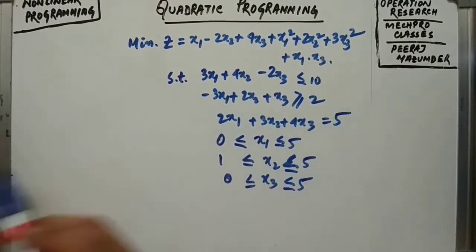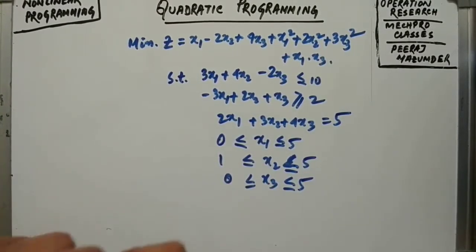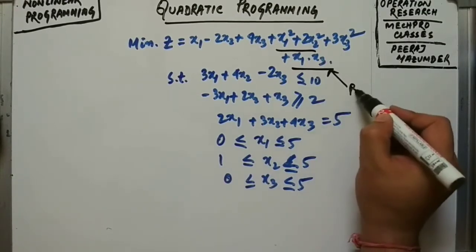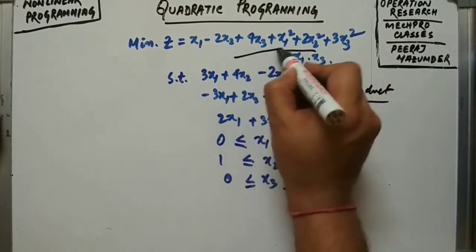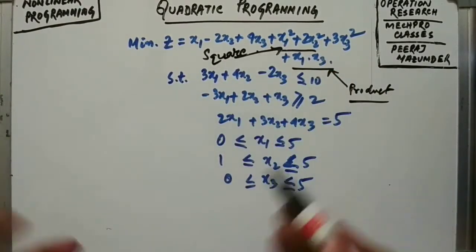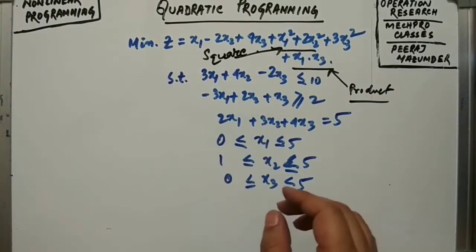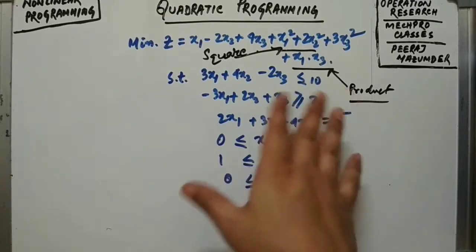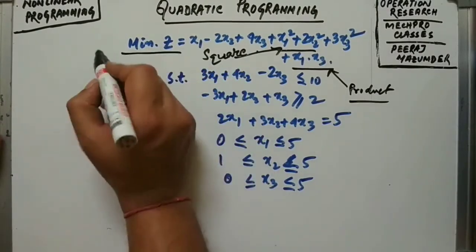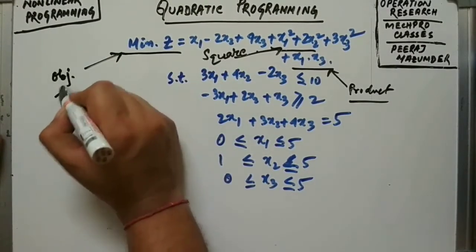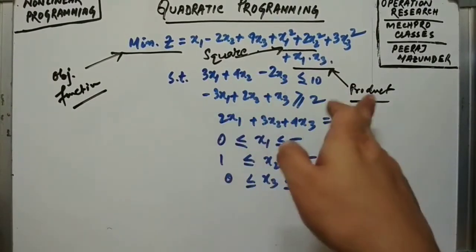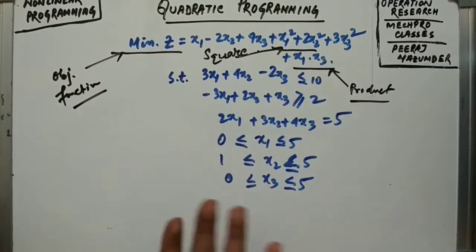This is a basic structure of a quadratic program. In the objective function, we have square terms (x₁², 2x₂², 3x₃²) as well as product terms (x₁·x₃). When we have combinations of square terms and product terms in the objective function, we can identify this as a quadratic programming type of problem.